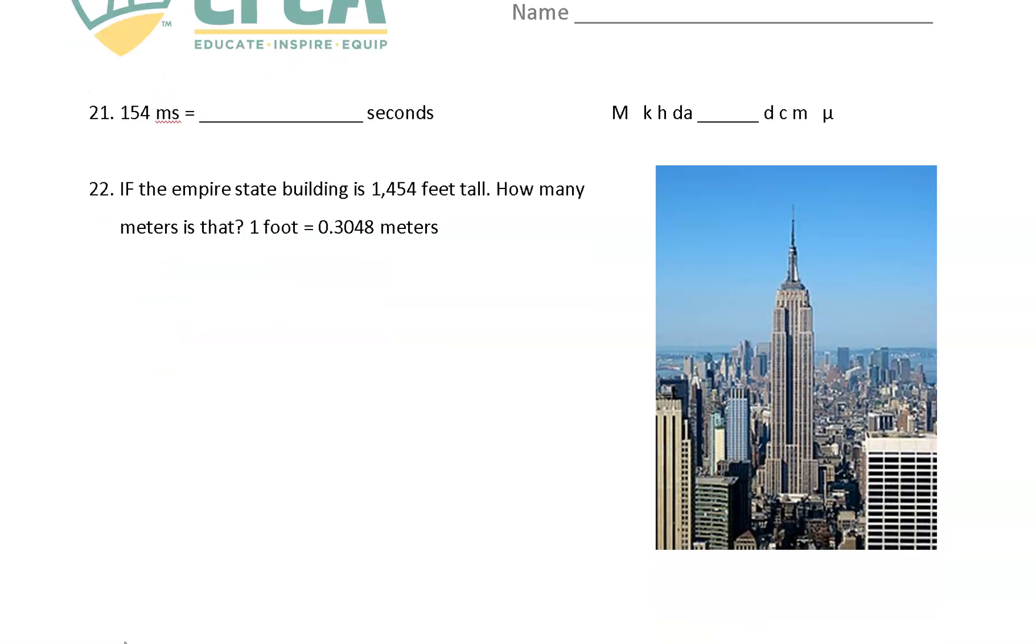For the last two questions, and sorry, this changed a little bit since I was adjusting this for the video. 154 milliseconds. Well, Millie's right here. You move one, two, three to seconds. And so that's 0.154. It is helpful to put a zero in front of there for our purposes and life signs. I'm not going to be that strict about it, but in future courses, just be prepared to go expect a zero before that decimal. If the empire state, so that's the answer there. We moved to the left three spaces.